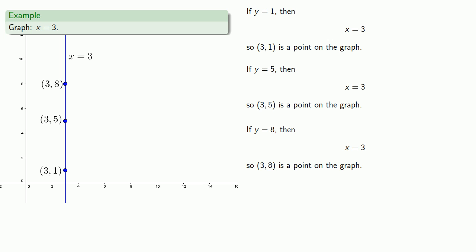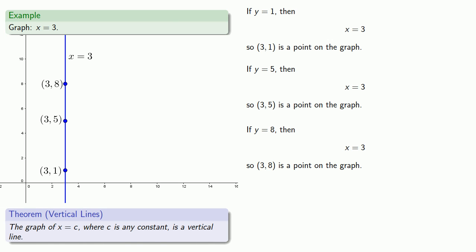And again, if x is equal to any other number, we're going to get a very similar graph. And so, this leads to the result: The graph of x equal to c, where c is any constant, is a vertical line.